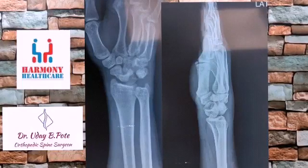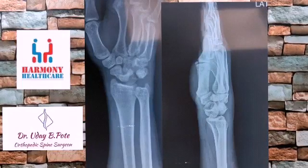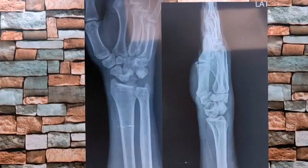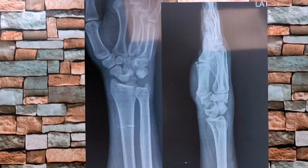In the previous story, we had seen this wrist AP and lateral views. To know what's wrong here, we need to understand the normal carpal alignment.